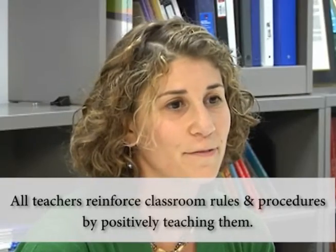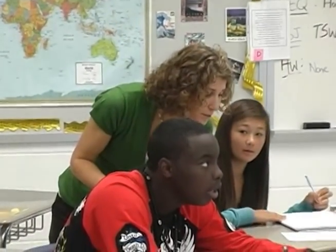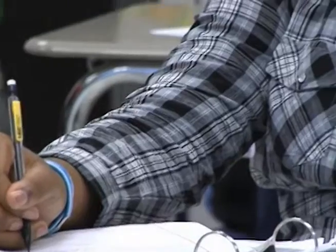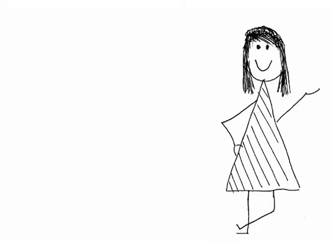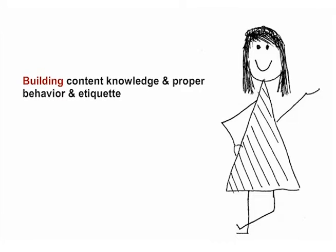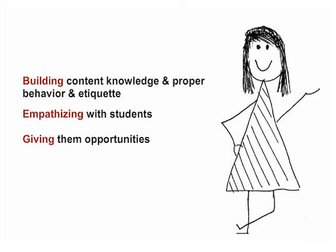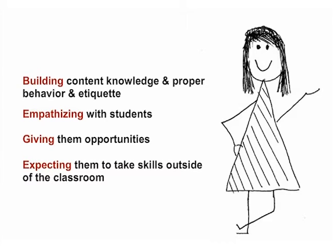I think it's important to always give students chances. I don't think they all come to our classrooms knowing the rules of etiquette or knowing what to do. So I feel like the first line of diffusing any kind of problem is to accept that maybe it's just a child who doesn't know. I also find that if you become combative, defensive, or argumentative, or start demanding things, then the student becomes more interested in a second level of engagement. This teacher believes in building content knowledge and skills, as well as proper behavior and etiquette. Notice how she empathizes with her students, giving them opportunities to learn the rules and procedures and expecting them to carry those skills outside the classroom.